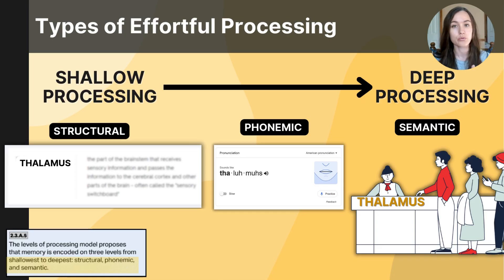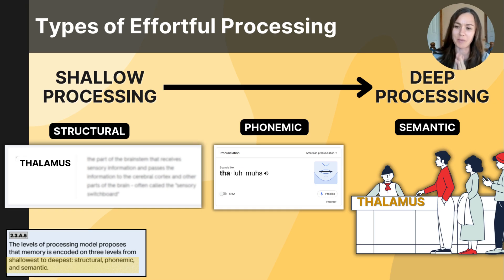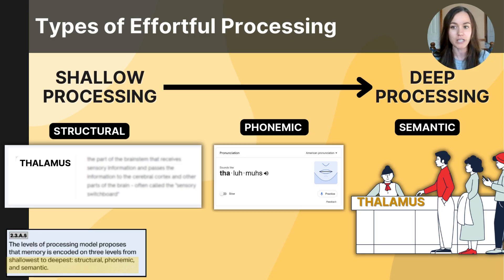This is called structural processing. You can also use phonemic processing — if you focus on the prefix 'phone,' it means sound, so phonemic processing means processing information based on what it sounds like. If you're studying the word 'thalamus,' you might think it sounds like 'alumnus' or 'anonymous,' or even 'hypothalamus.' But if you're just remembering a word based on what it sounds like without making any meaningful connection to it, you're really not going to make a long-term connection. So phonemic processing is another more shallow method.